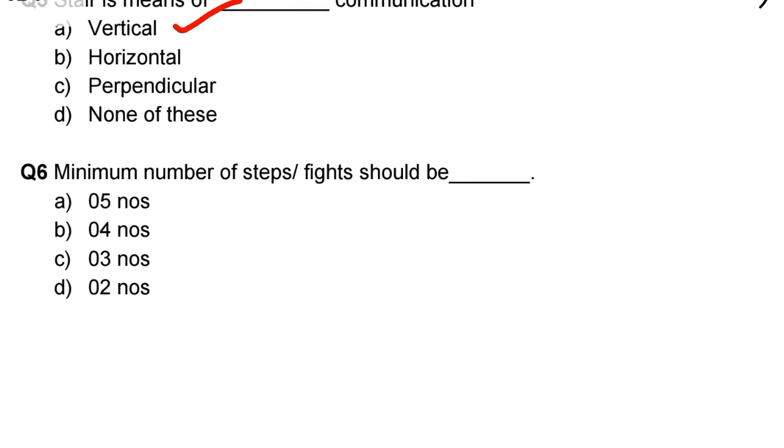Next question: minimum number of steps per flight should be. Option A: 5 numbers, Option B: 4 numbers, Option C: 3 numbers, Option D: 2 numbers. The correct answer is option C, 3 numbers.